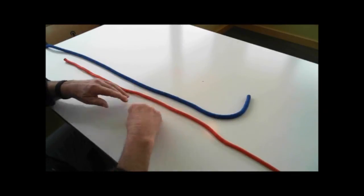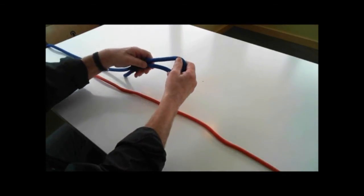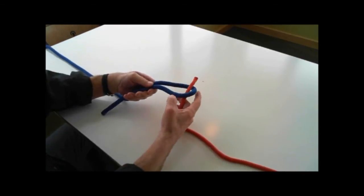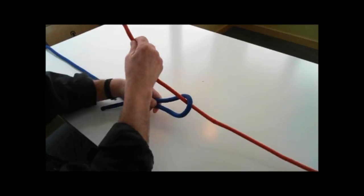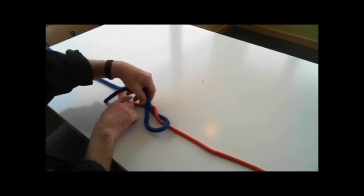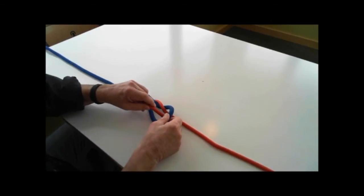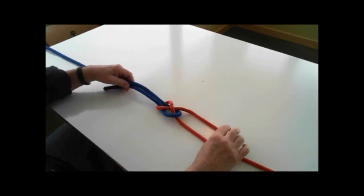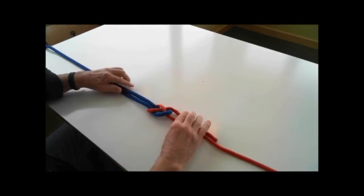Tie a sheet bend. And we have a bite. The rabbit comes out of the hole, goes around the back of the tree, and instead of going back down the hole, we go under the log. We now have a bite and a trap called the sheet bend.